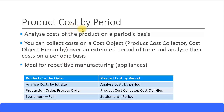Simply by looking at the words itself, product cost by period means to analyze the cost of the product on a periodic basis. That's the simple meaning of product cost by period. You can collect the costs on a cost object, and there are two cost objects related to product cost by period: the product cost collector and the cost object hierarchy. We'll look at those two definitions in the upcoming slide.